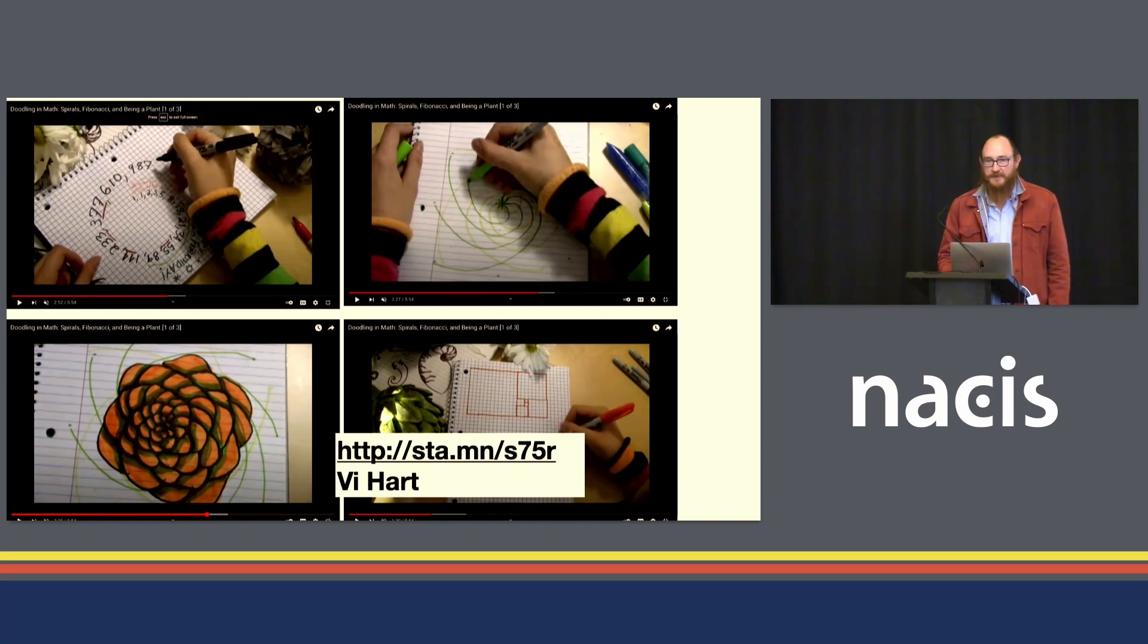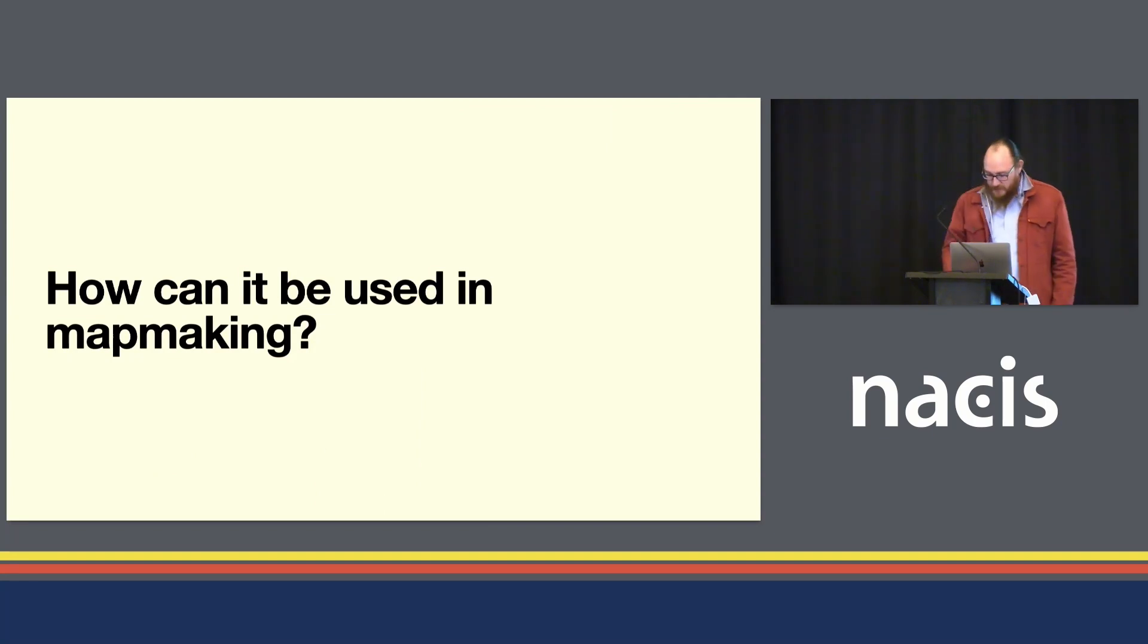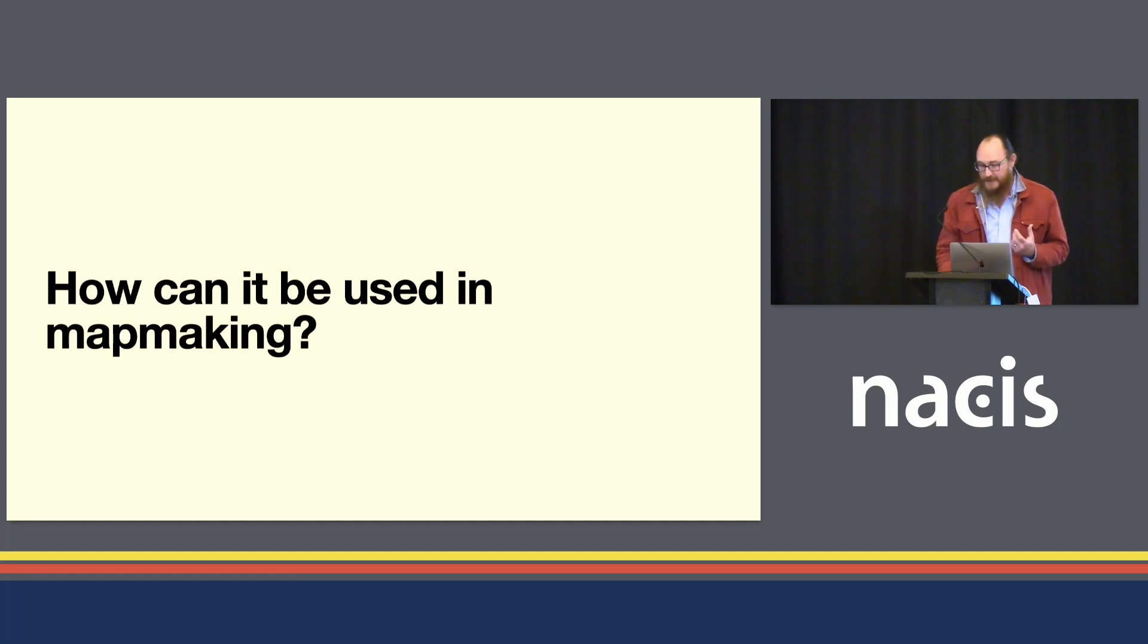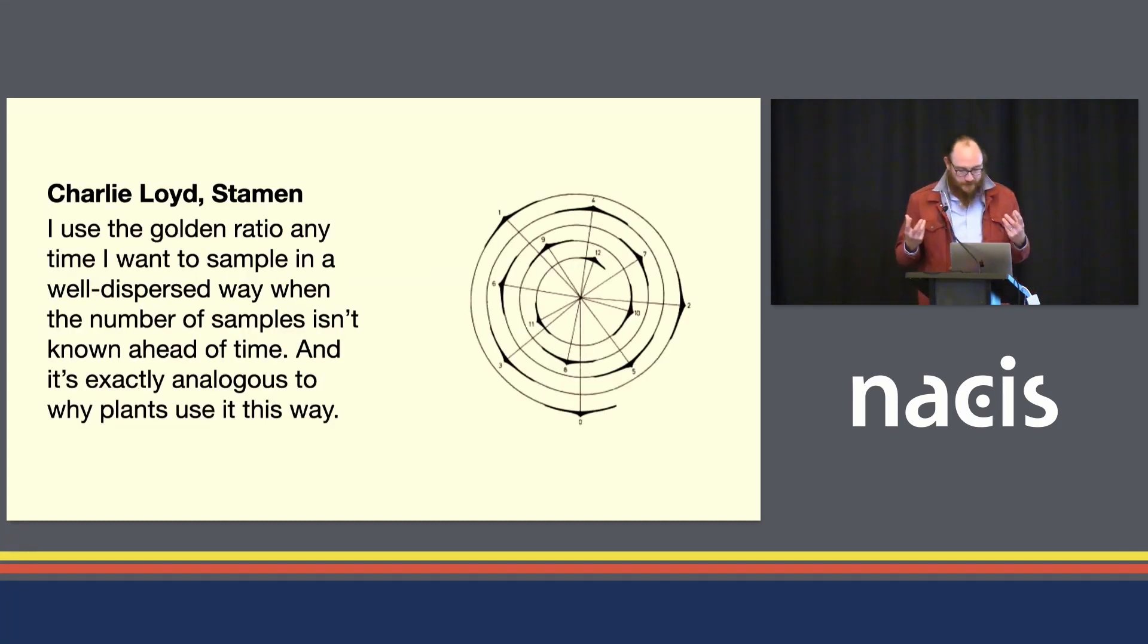It's like that thing, how do you know there's a vegan at your party? They'll tell you. It's kind of like that with me and golden ratio these days. So we have this ratio, and it seems to be embedded in fundamental geometrical relations and it seems to be embedded in nature. And so according to Charlie, who's a great guy, he told me this: I use the golden ratio anytime I want to sample in a well-dispersed way when the number of samples isn't known ahead of time. And it's exactly analogous to why plants use it this way. So the central thing that I'm trying to get across is that it's a way of sampling and making things that is optimally efficient, even when you don't know how many resources you have, when you don't know how far you want to go. You can basically use it for as long as you need to and then stop when it looks cool, which deeply appeals to my sense of aesthetics and parsimony.